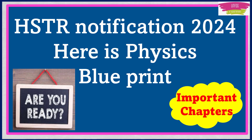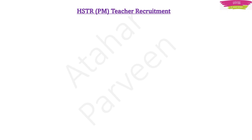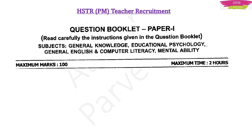Many aspirants were requesting a blueprint of HSTR physics and mathematics, so I have brought you the physics blueprint in this session. The HSTR exam has two papers. Paper one is the general part covering general knowledge, educational psychology, general English, computer literacy, and mental ability. This question paper is 400 marks — 100 questions, each carrying four marks, with no negative marking, and a time limit of two hours.